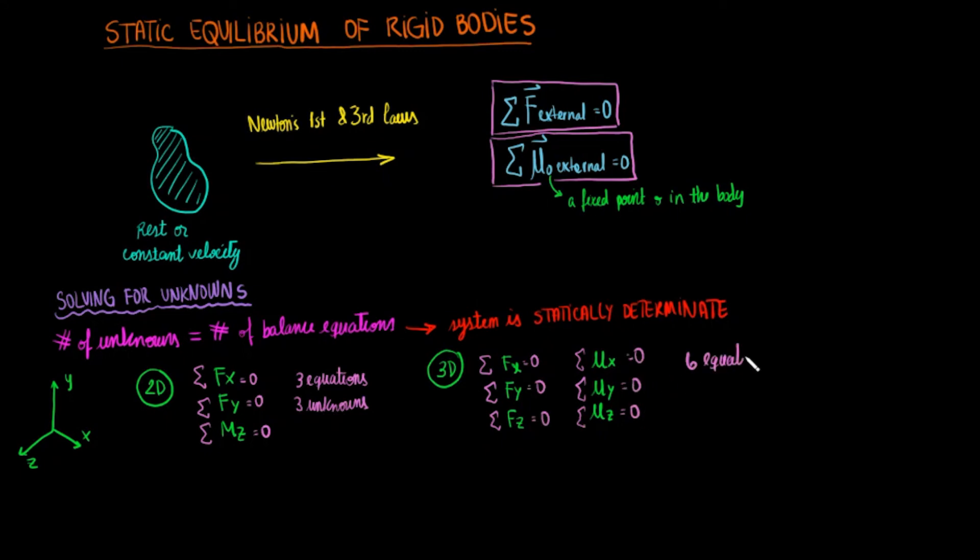When we have too many equations and too little unknowns to solve for, our system is under-constrained. We tend to then call this system unstable.